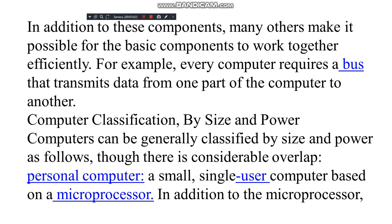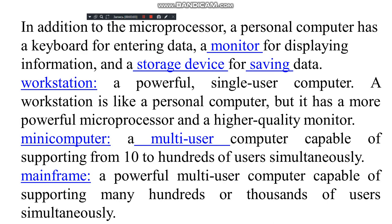In addition to the microprocessor, a personal computer has a keyboard for entering data, a monitor for displaying information, and a storage device for saving data. Workstation: a powerful single-user computer — like a personal computer but with a more powerful microprocessor and a higher-quality monitor. Mini computer: a multi-user computer capable of supporting from 10 to 100 users simultaneously.